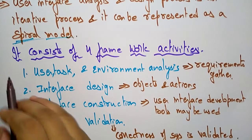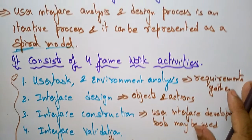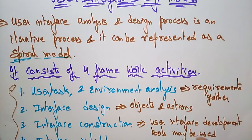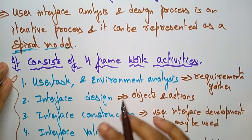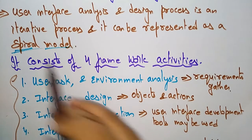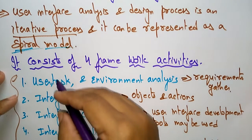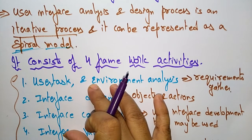These are the four framework activities to be performed in the user interface analysis and design process. The design models — user model, design model, mental model, and implementation model — are all the same here. The main point is that the entire process is carried out in an iterative fashion using those four design models.